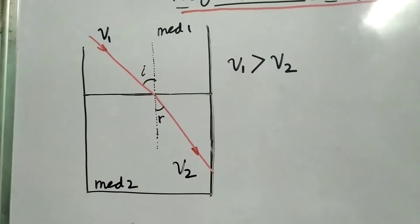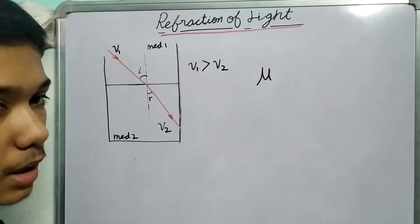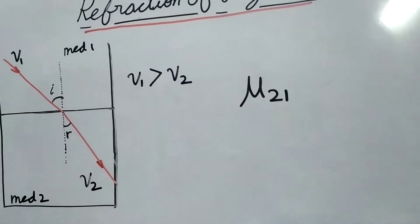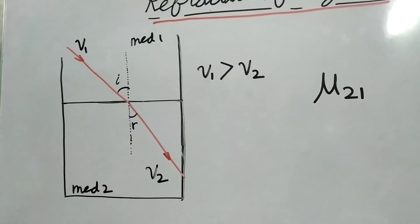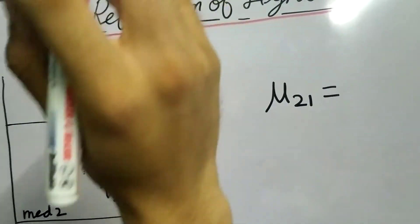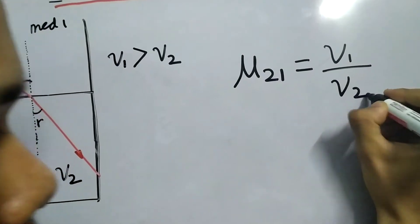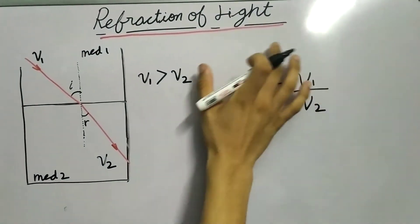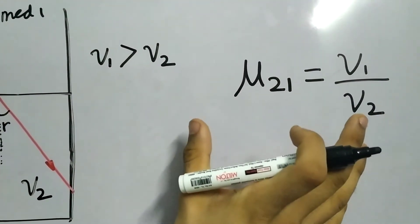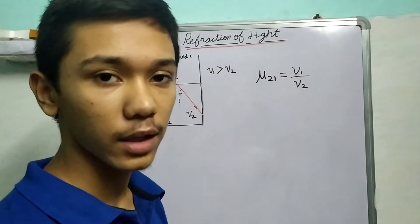In other words, if light is bending towards the normal, then we can conclude that if it has velocity v2 here and v1 here, that v1, the velocity of light in medium 1, is greater than the velocity of light in medium 2. If you want to understand this deeply, the link is given in the description.